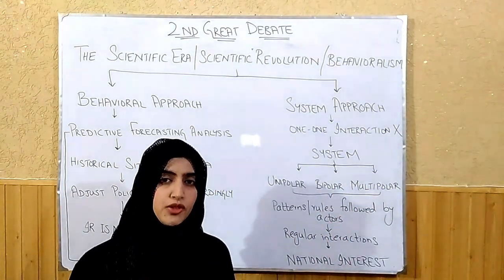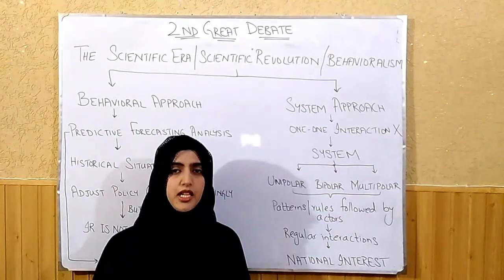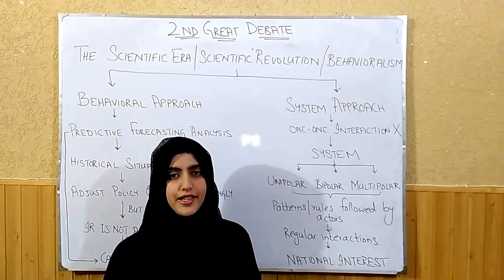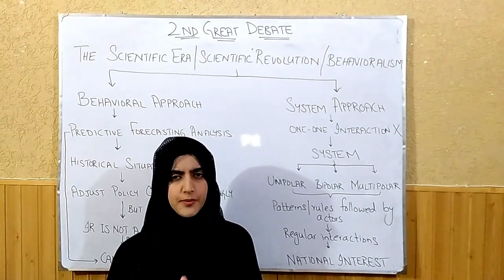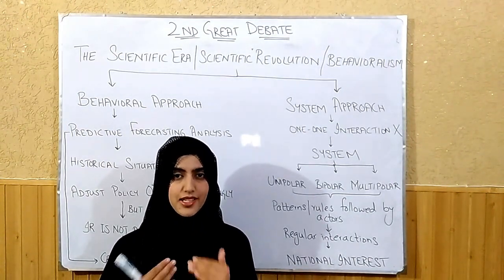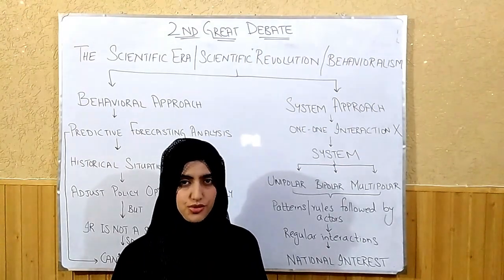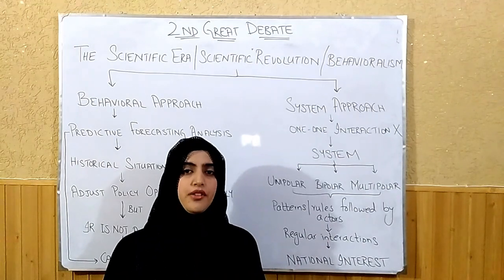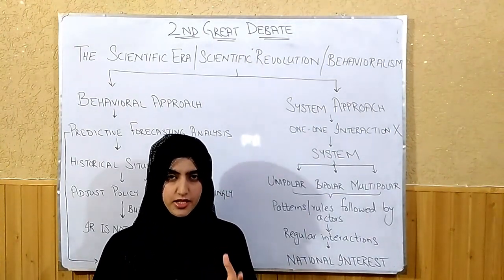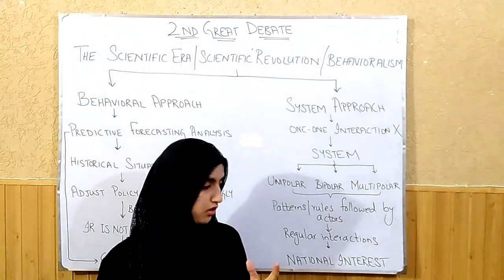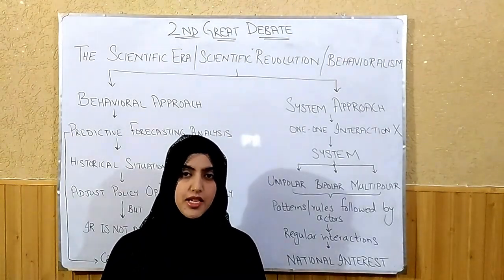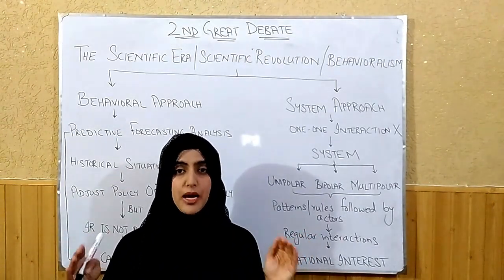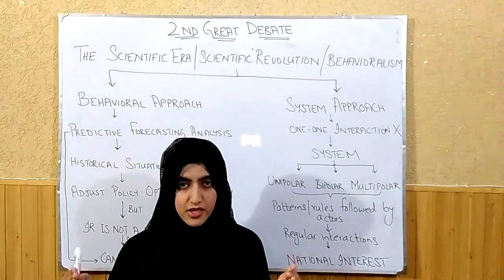A unipolar world order means there will be one hegemon in the world — one dominant power that influences the whole international system. Before Covid-19, the United States of America was considered the most dominant power and the world was unipolar. In terms of bipolarity, during the Cold War, the USSR and the United States of America represented a bipolar order — two great powers that dominated the world.